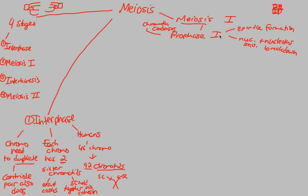Prophase I is the first step of meiosis I. Remember, we've completed interphase, and now we're in meiosis I, which actually contains four steps: PMAT — prophase I, metaphase I, anaphase I, and telophase I — which we'll go over as we continue with this lecture series.